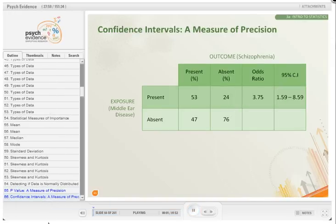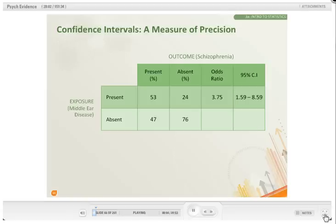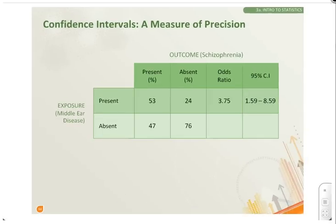The other method of precision is the confidence interval. Confidence intervals provide a range within which the observed effect would lie. It is calculated from the standard error of mean, which is standard deviation divided by the square root of the sample size. It thus gives us a range of uncertainty.